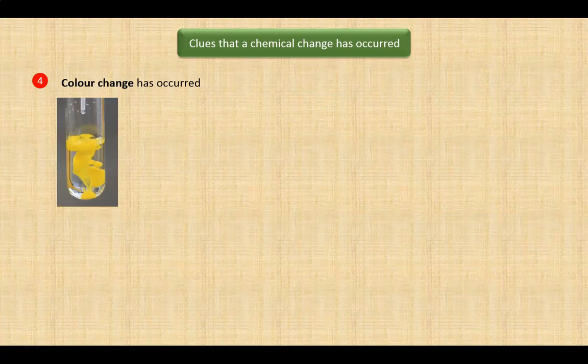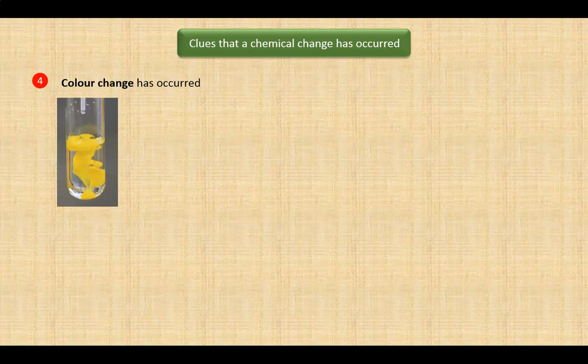A fourth clue is whether a color change has occurred. In the formation of this precipitate, as you have already seen, a chemical change is taking place. So therefore, color is a clue that a chemical change occurred.